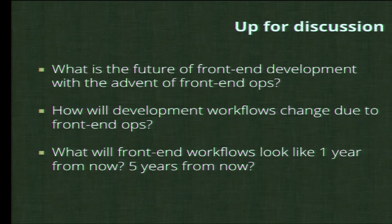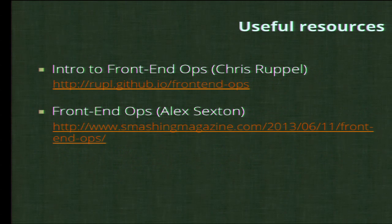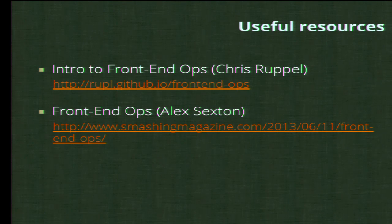What will front-end workflows look like one year from now, five years from now? My theory is it's going to be a lot more automation — much more of our front ends will be automated. I think this is only the beginning, just the first initial steps of what's going to become a very burgeoning trend. Five years from now, I have no idea what it's going to look like, and I'm curious to see your thoughts. If you want to learn more, here are some great resources: Chris Ruppel's 'Intro to Front-end Ops', Alex Sexton's original article in Smashing Magazine, and an article from CSS-Tricks called 'Grunt for People Who Think Things Like Grunt Are Weird and Hard.'